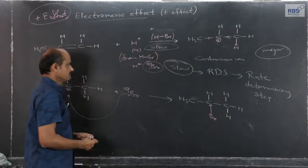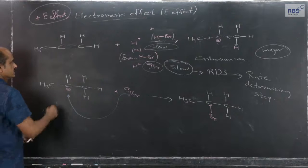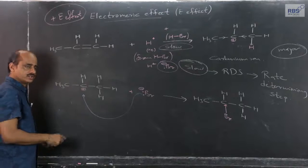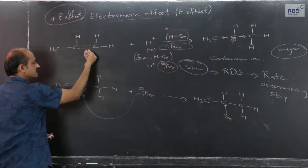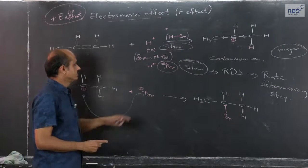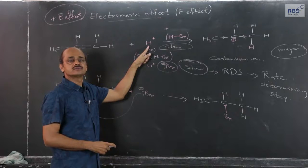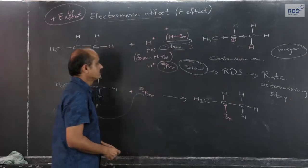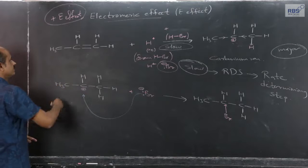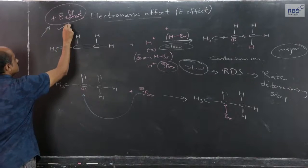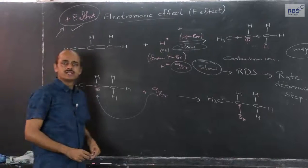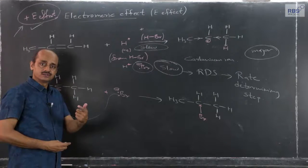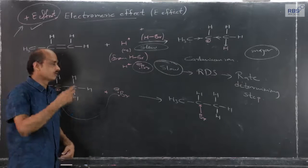This slow step is important. Since the electron pair from the pi bond in the double bond gets transferred toward that carbon atom where the reagent gets attached — the electron pair goes to the carbon where the reagent attaches — that is why this example is an example of positive electromeric effect. In the next example, we will consider the opposite: minus E, or negative electromeric effect.